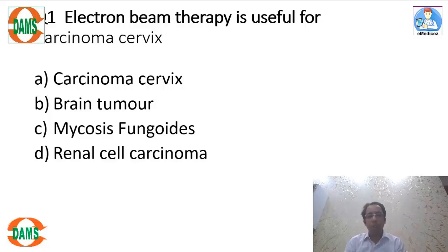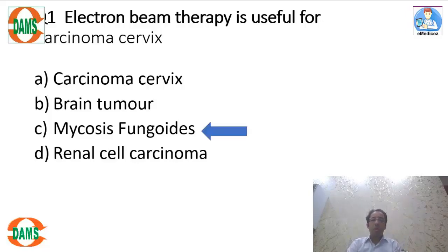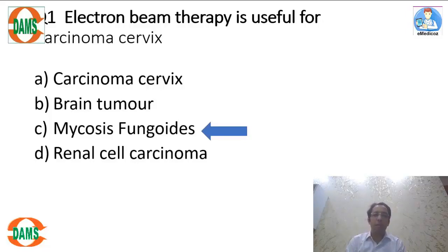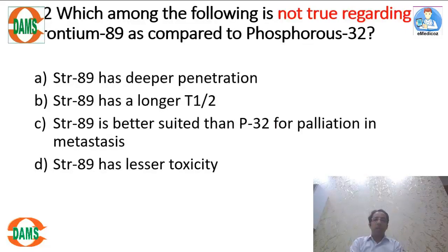Looking at choice C — mycosis fungoides — it looks like a fungal infection but it is not. Mycosis fungoides is a fancy name for cutaneous lymphomas, i.e., skin lymphomas. Because they are superficially located, they can be treated by electron beam therapy. The answer is C.